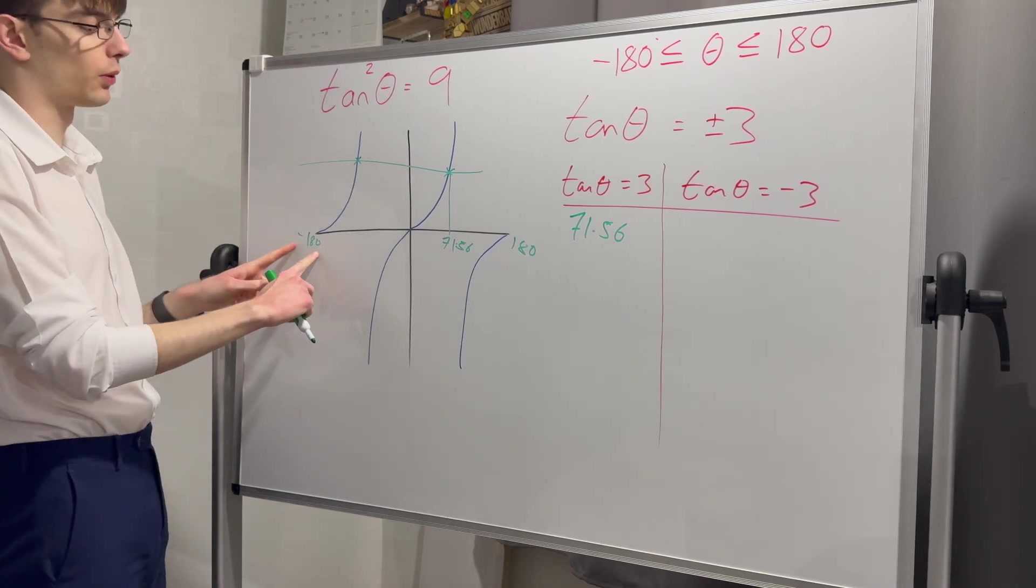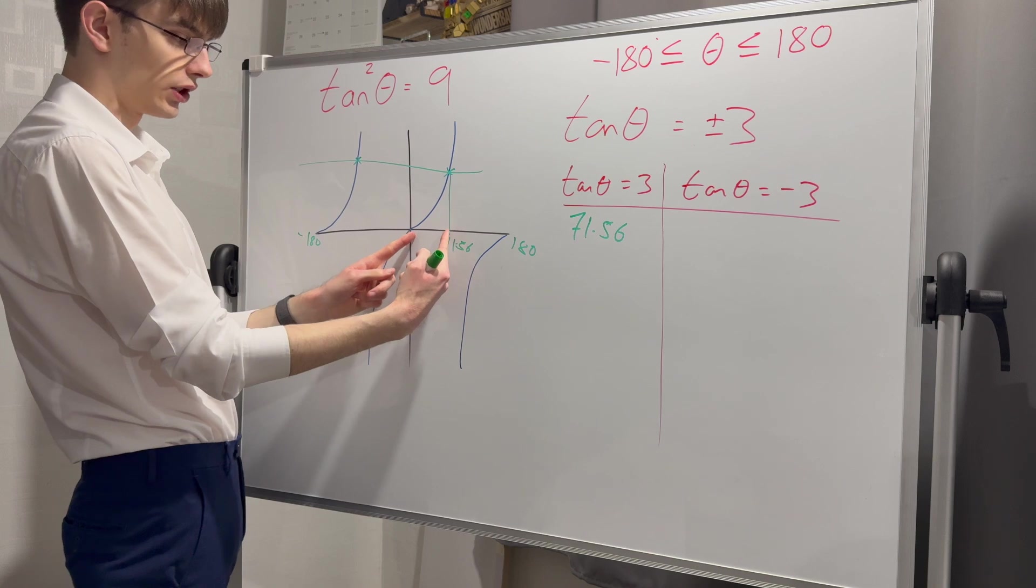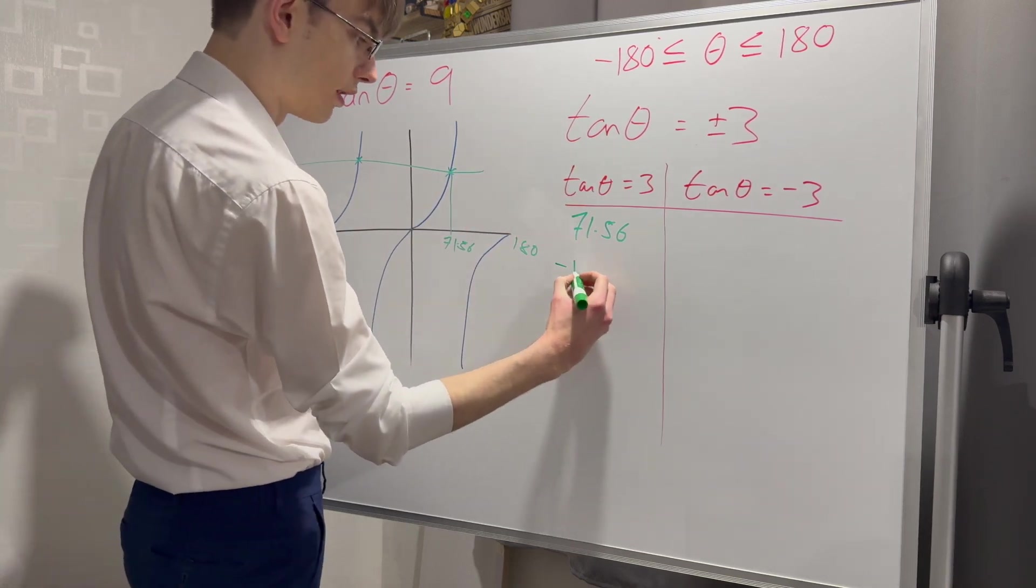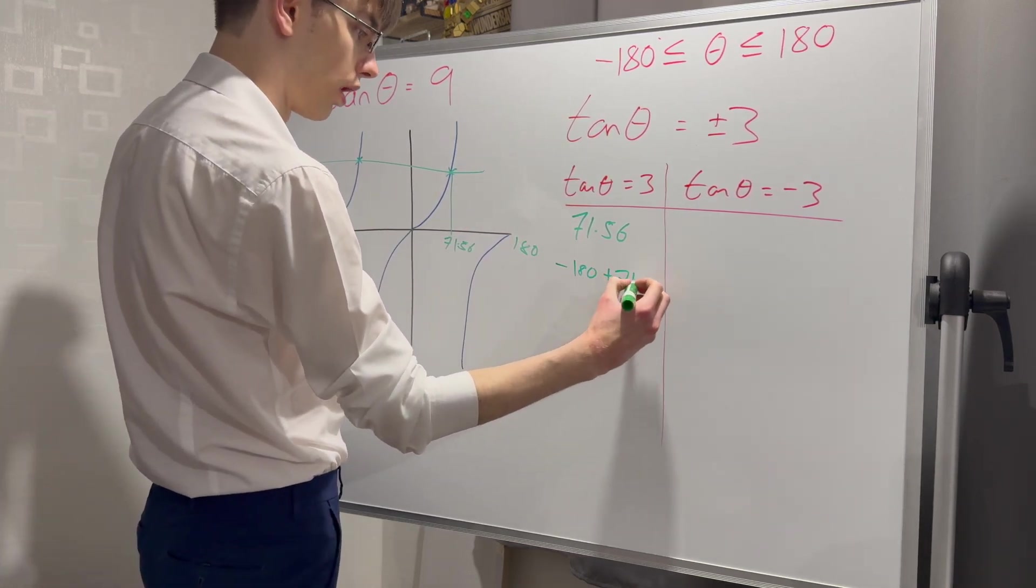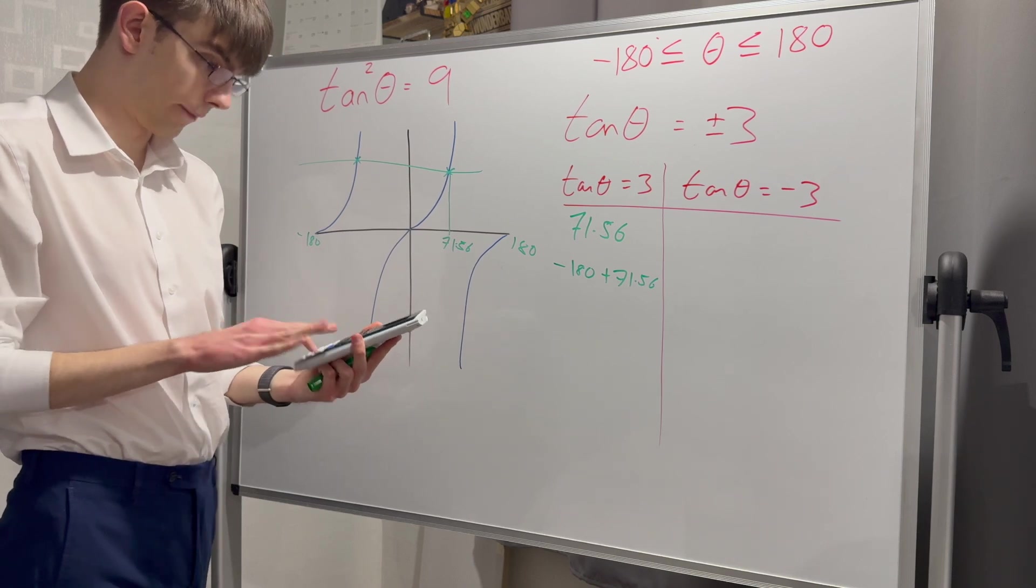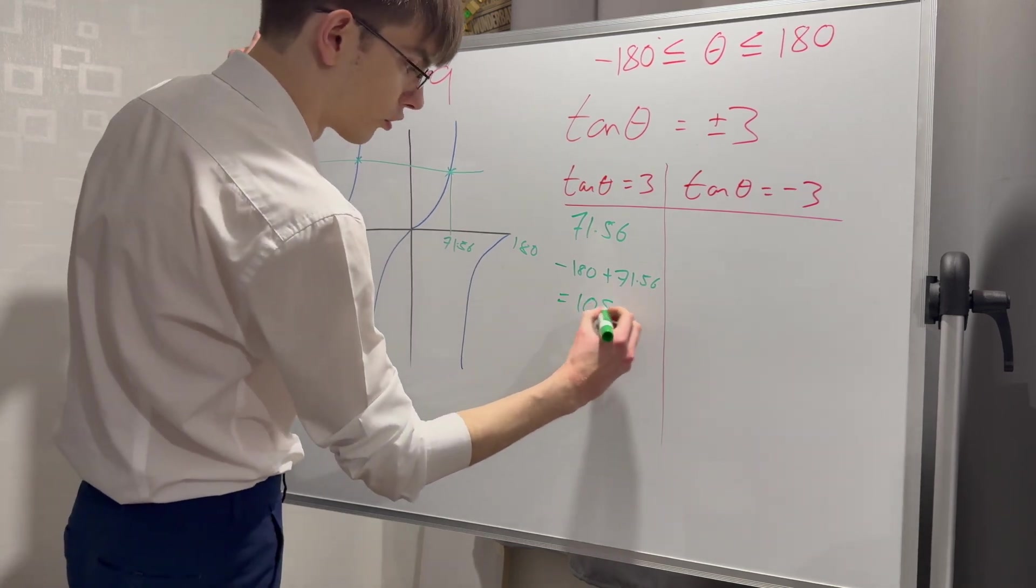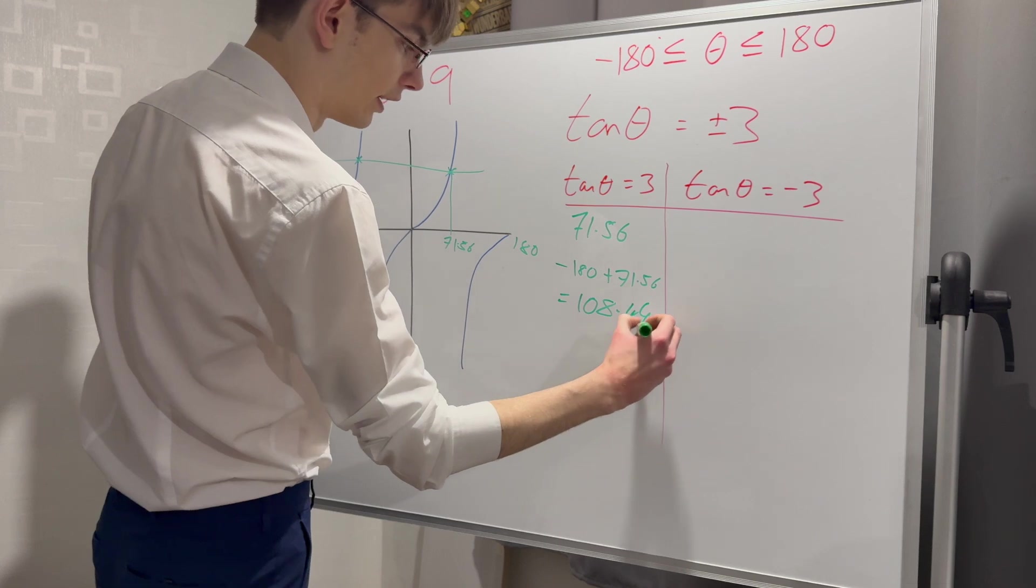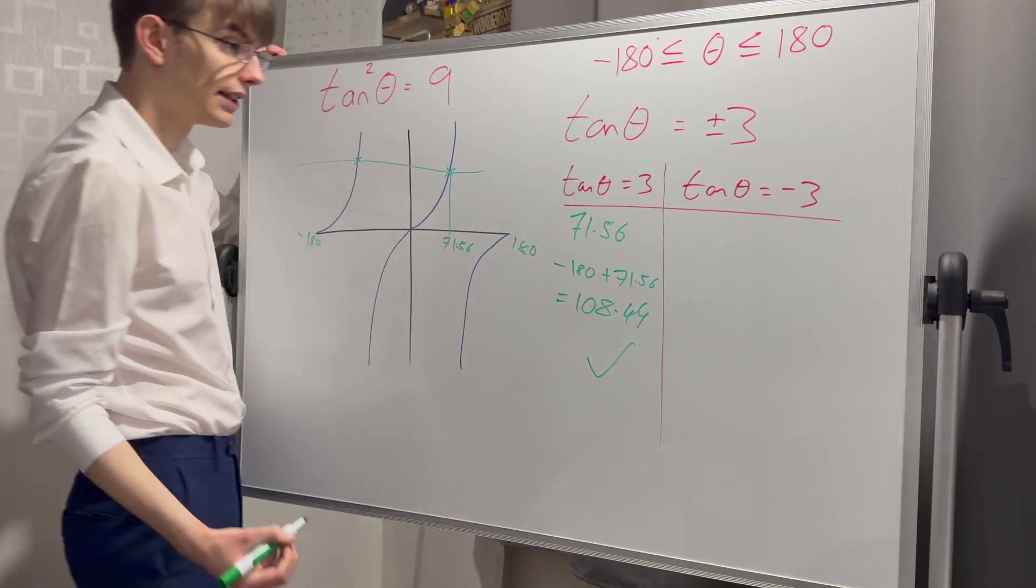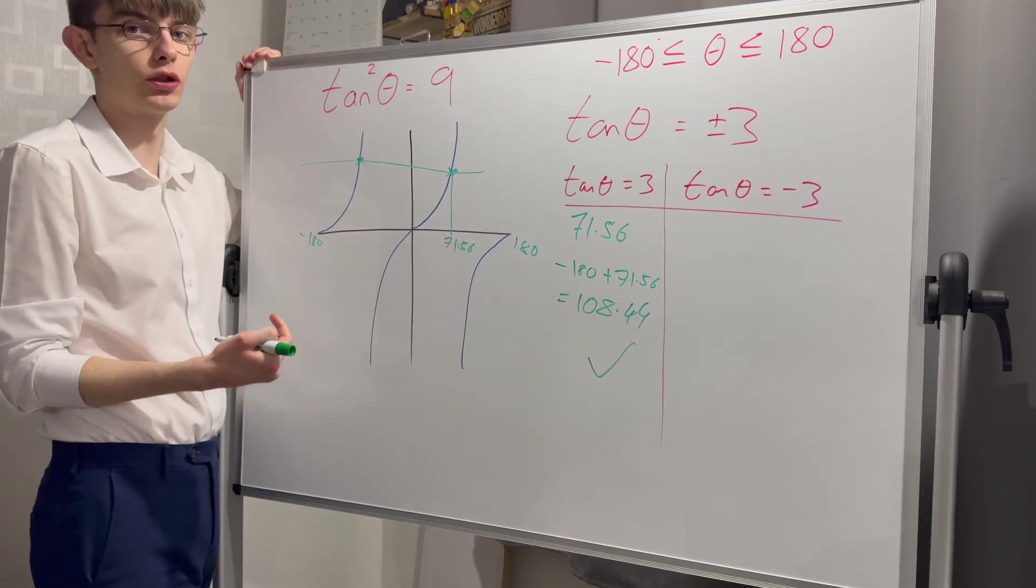I know this value here is minus 180 where tan is zero. This distance here is 71.56, which is the same as this distance here. So my other option is minus 180 plus 71.56, which is minus 108.44. I know I'm finished with this because I only have two crosses on my graph. It only intersects my graph twice.